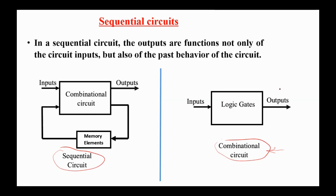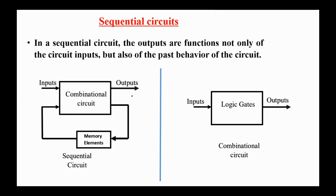In any combinational logic circuit, the outputs are a function only of the inputs. While in a sequential circuit, the outputs are functions not only of the circuit inputs but also of the past behavior of the circuit, since sequential circuits have feedback that participates in generating the next outputs.